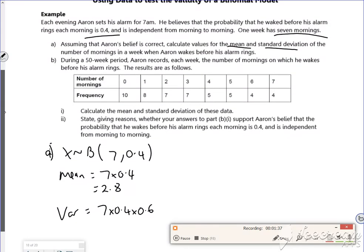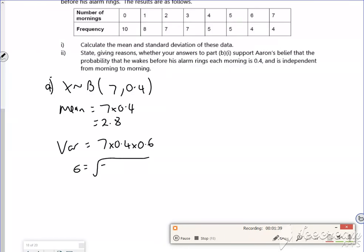So the sigma value is the square root of that. So sigma equals 1.3.